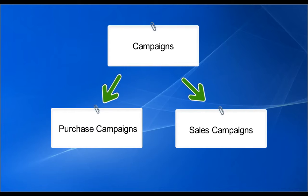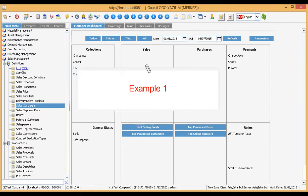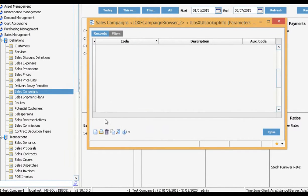The two types are purchase campaign and sales campaign. We will explain how to work with campaigns through examples. The first example is about campaign and discount, the second example is about campaign and promotion, and the last example is about campaign and points. Follow this part of the video to see how we can do that. Let us create a new campaign.